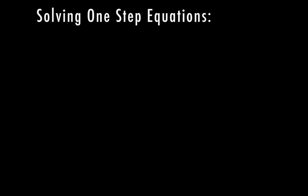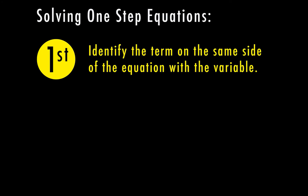When we're solving one-step equations, the first step we want to do is identify the term on the same side of the equation with the variable. So let's look at a couple of examples here so we can figure this first step out. First we have x plus 4 equals 8. The variable in our situation here is x, and on the same side as the variable, I have x plus 4. So that's what I'm going to be working with in order to solve this on the next step.